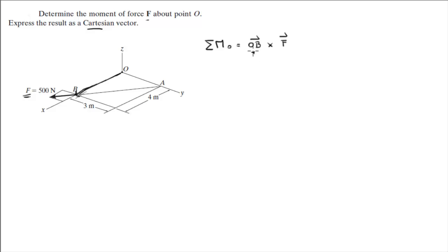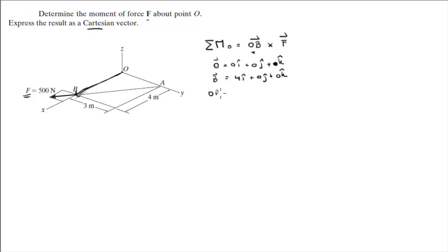The first thing we need to do is get the position vector OB. To do that we need the position of O, which is the origin: 0i + 0j + 0k, and the position of B, which is 4i + 0j + 0k. Vector OB equals vector B minus vector O, but since O is the origin, this is the same as vector B: 4i + 0j + 0k.